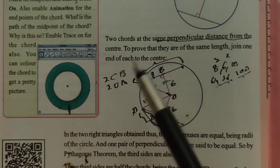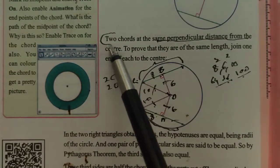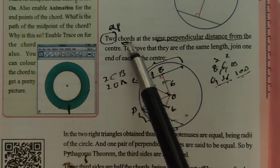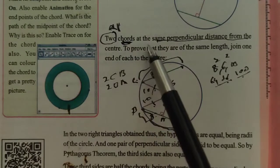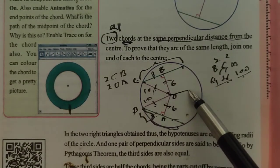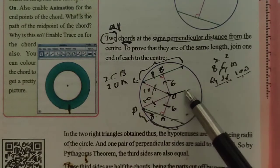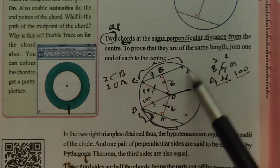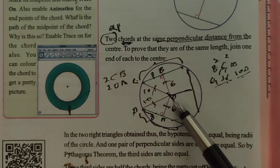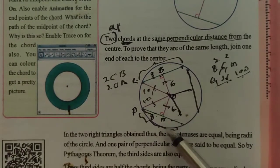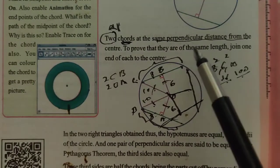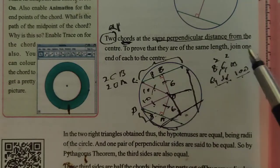We can extend this theorem beyond just two chords. There are many other chords at the same distance. All chords at the same perpendicular distance from the center are equal. We can construct another chord with the same perpendicular distance, and another, and another. Then all three chords are also equal. Therefore, all chords at the same perpendicular distance from the center have equal length.